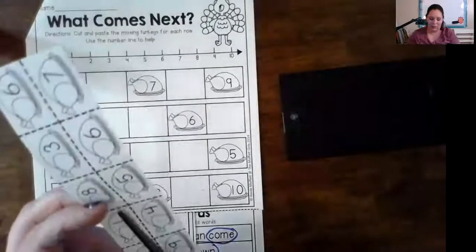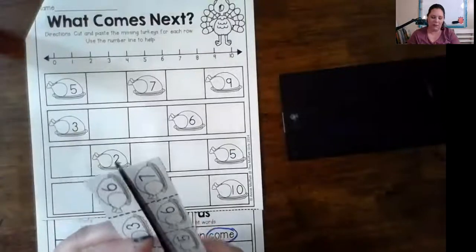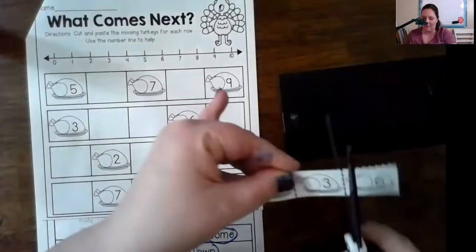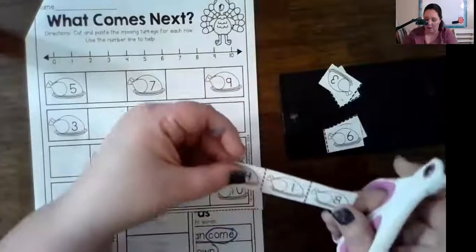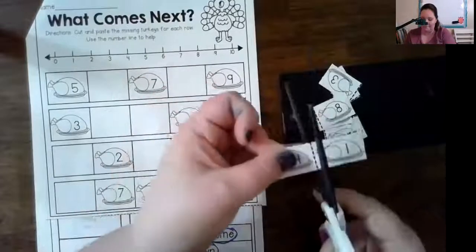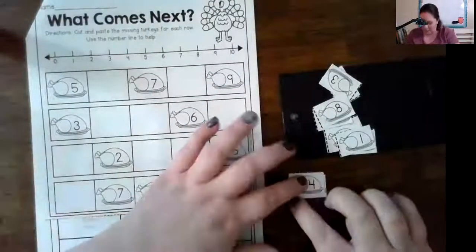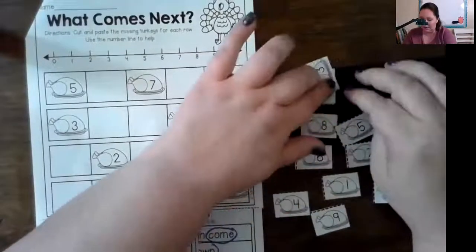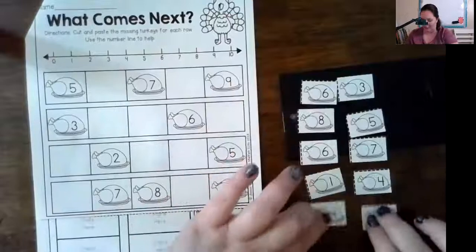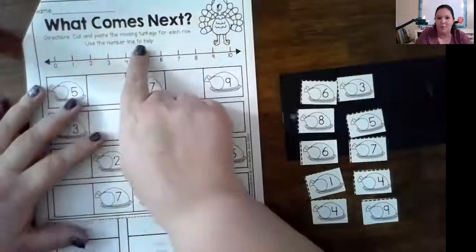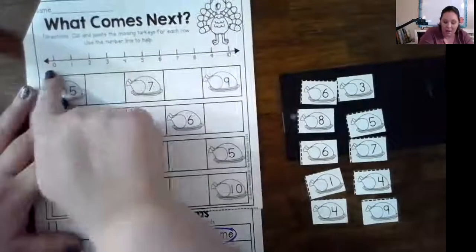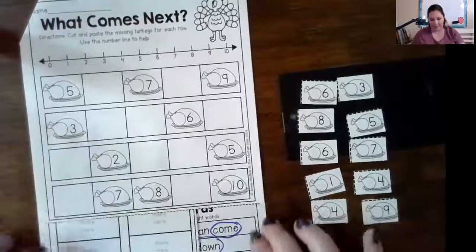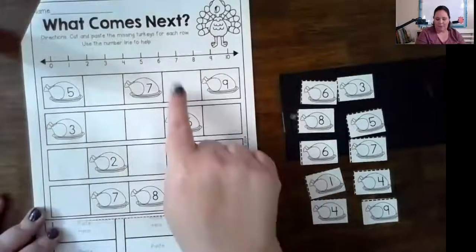We're going to cut, trim, and paste. I probably cut much faster than you, so if when I finish you still need to cut, then pause and catch up to me. Let's lay it out. I'm all laid out so I can see them. So we have cut and paste the missing turkeys for each row. Use the number line to help. So five blank, seven blank, nine.